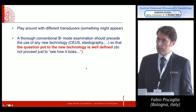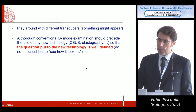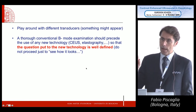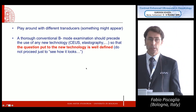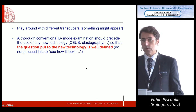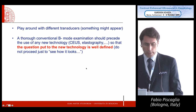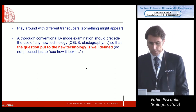Working with different transducers has already been discussed. With CEUS, the resonant frequency of the micro-bubbles means the convex probe usually works better than the linear probe. However, before resorting to CEUS you could also use the linear probe in certain situations to get more information about blood flow with Doppler.